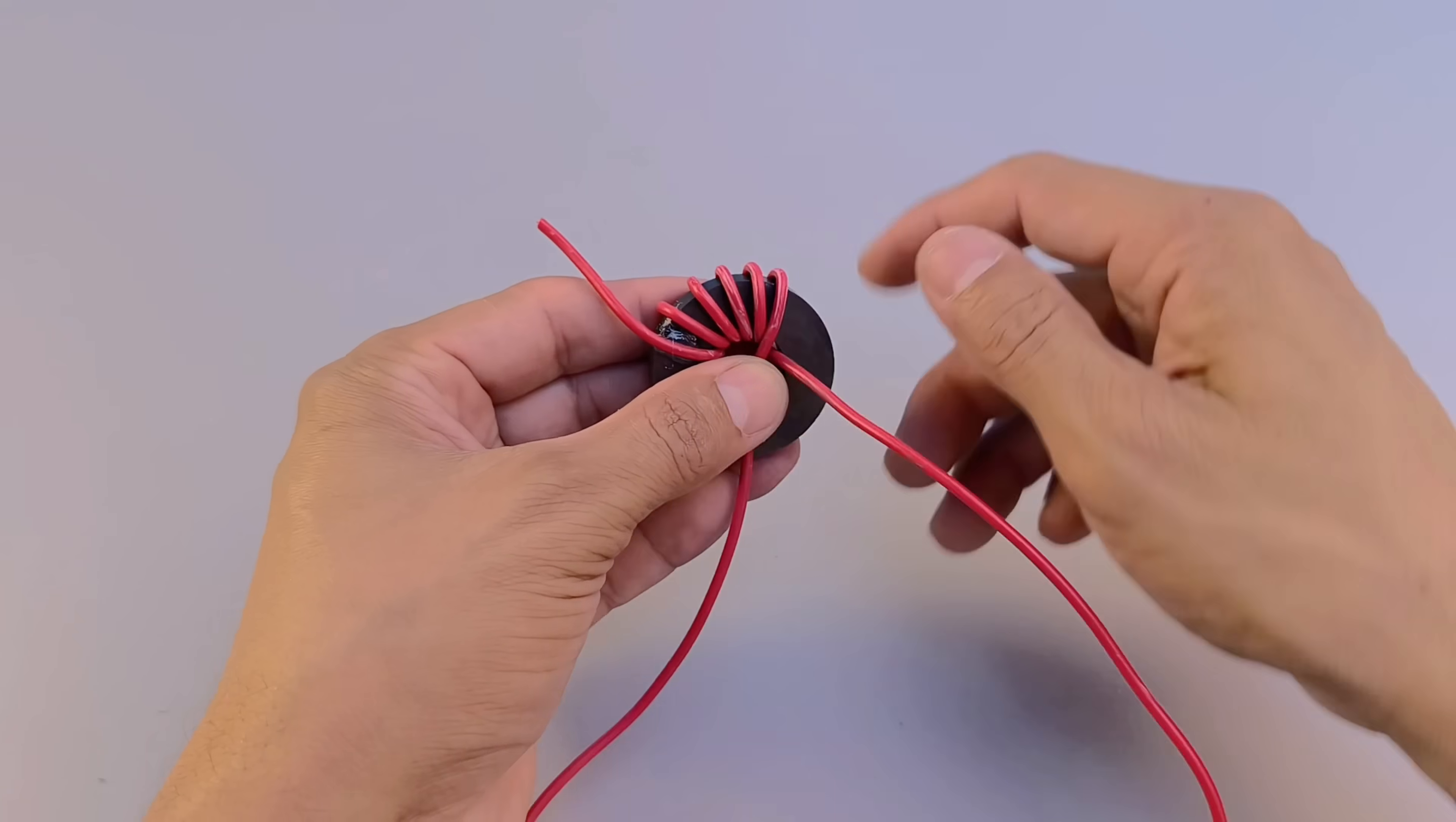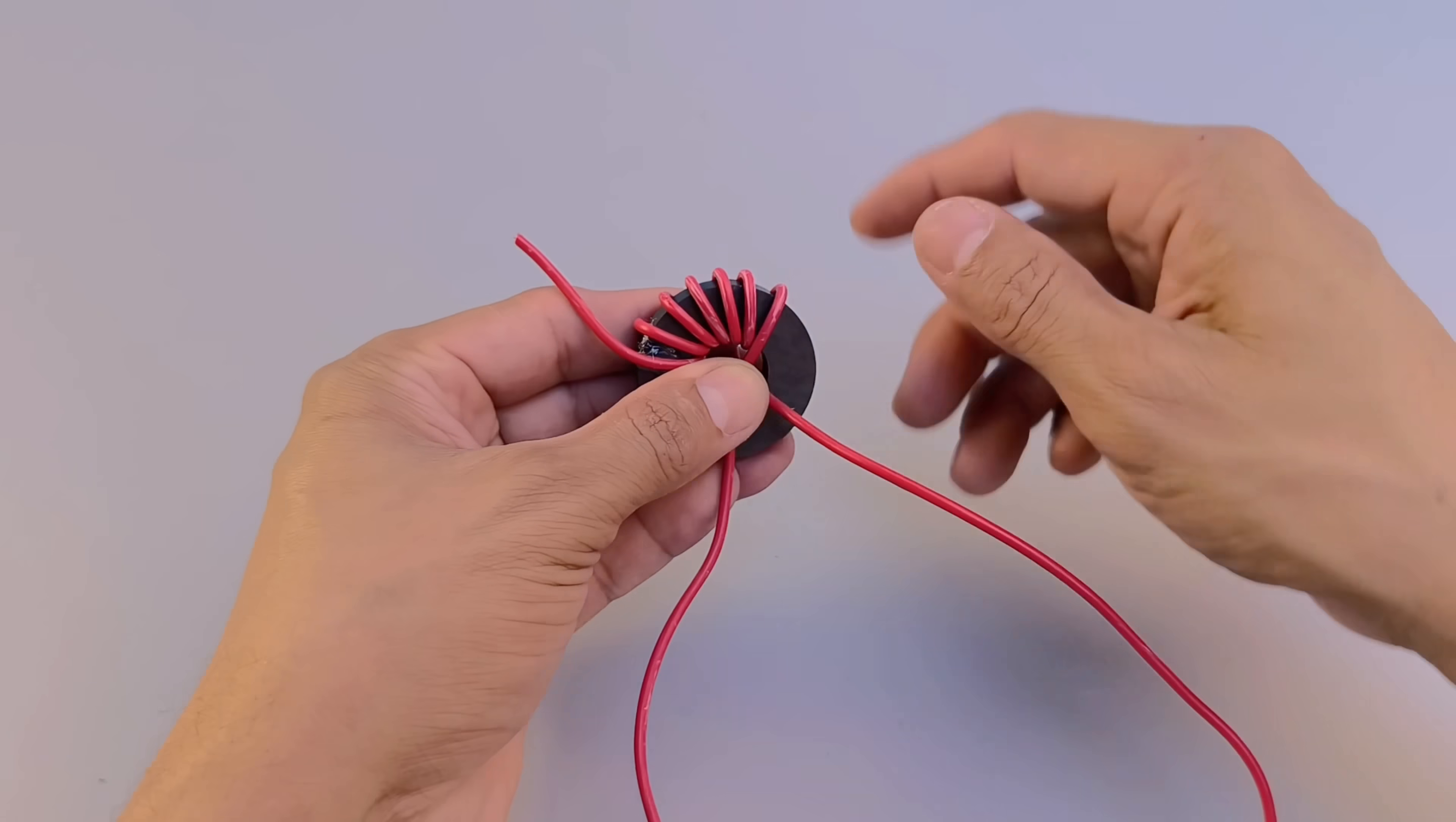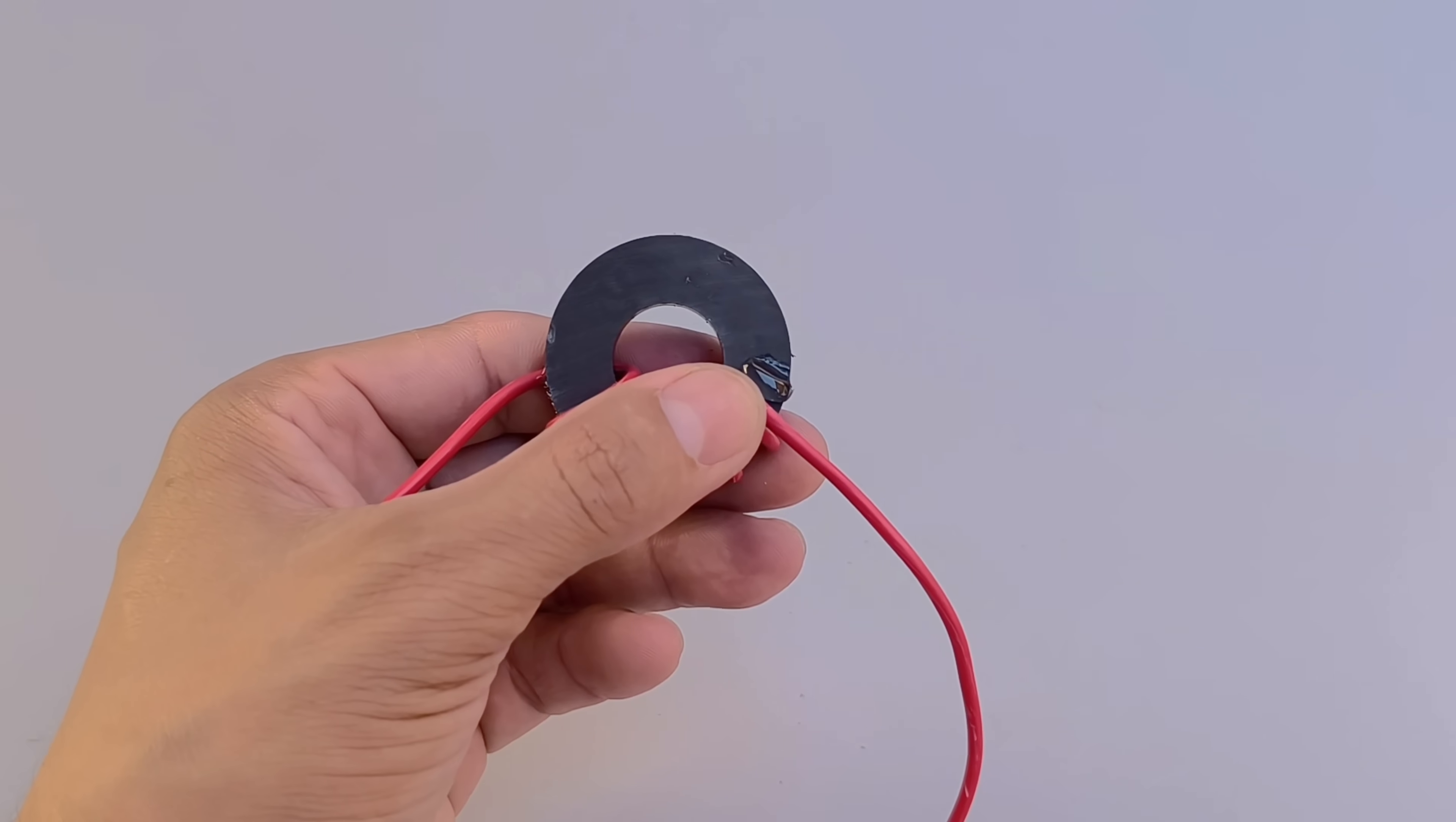Don't worry about the color of the wires. They can both be the same color, as long as they are copper and insulated to prevent short circuits. The important thing is to make sure that the turns are evenly distributed and tight, so that the magnetic field is created efficiently.